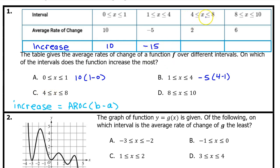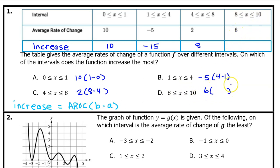For the interval from 4 to 8, the increase will be the average rate of change, which is 2, times the width 8 minus 4 — so 2 times 4, which is 8. On the interval from 8 to 10, the increase is 6 times 10 minus 8, which is 2 — so 6 times 2 is 12. The interval over which the function increases the most is from 8 to 10, with an increase of 12. The answer is D.